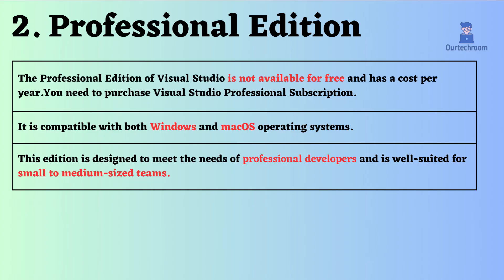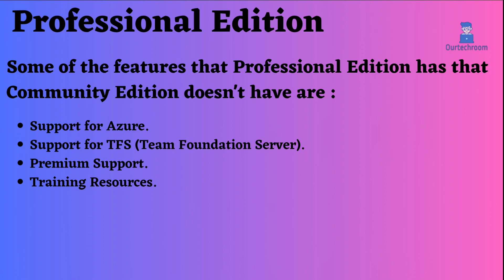The Professional Edition of Visual Studio is not available for free and has a cost per year. You need to purchase a Visual Studio Professional subscription. It is compatible with both Windows and macOS operating systems. This edition is designed to meet the needs of professional developers and is well suited for small to medium-sized teams. Some of the features that Professional Edition has that Community Edition does not have are: 1. Support for Azure. 2. Support for TFS (Team Foundation Server). 3. Premium Support. 4. Training Resources.